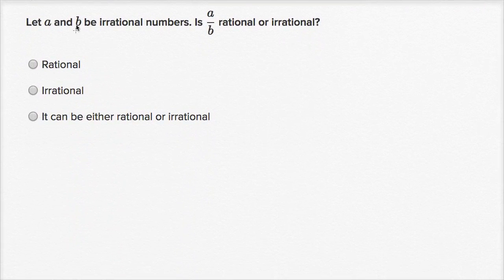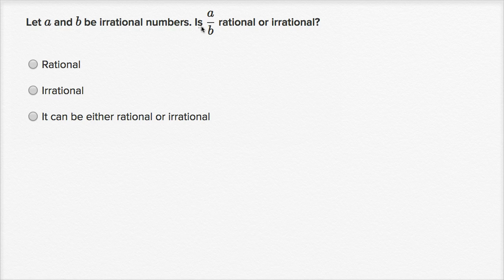Now we're saying let A and B be irrational numbers. Is A over B rational or irrational? Pause the video and try to think this through. You might want to try some examples of irrational numbers and see whether dividing them gives you a rational or irrational result.